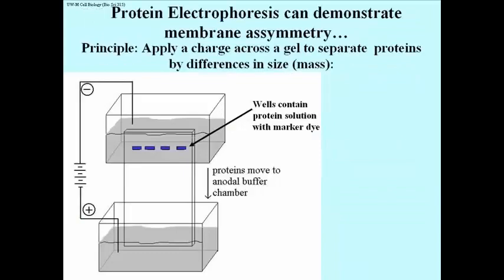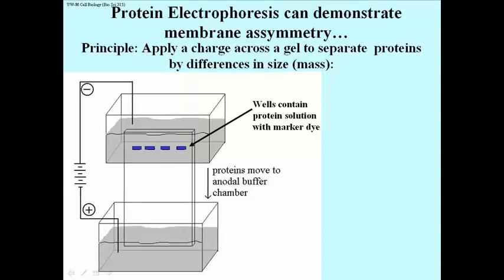Here's an experiment that demonstrates membrane asymmetry. To explain this, I have to go into electrophoresis. The setup is shown here with a chamber above and a chamber below, with a direct current or DC power supply. We have an anodal chamber, which is the positively charged chamber, and a cathodal chamber up top. The proteins have been dissolved in solutions such that their net overall charge is negative, so when we turn the power on and apply a charge across a slab of gel, the proteins will move towards the anode because they tend to be negatively charged.